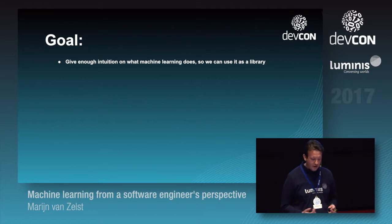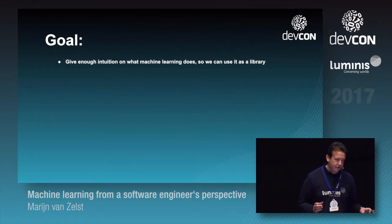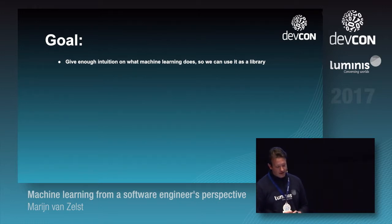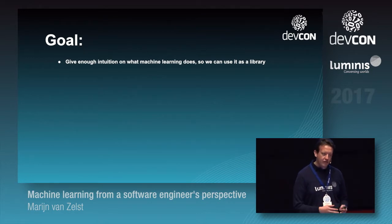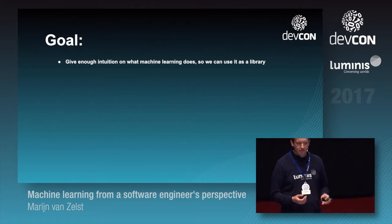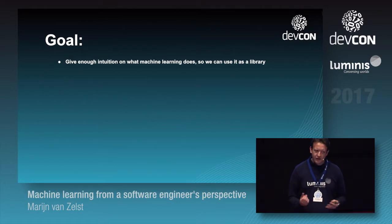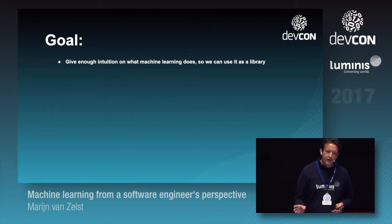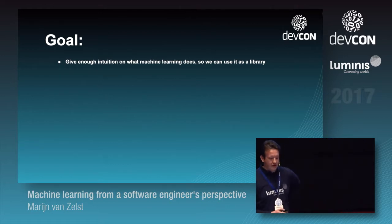As software developers, we use lots of libraries when we make software. What defines a library is that you can use it without completely understanding everything that happens inside — otherwise it wouldn't be a good library. But you have to know something about what's going on and when you should apply it and when that library is a good fit.